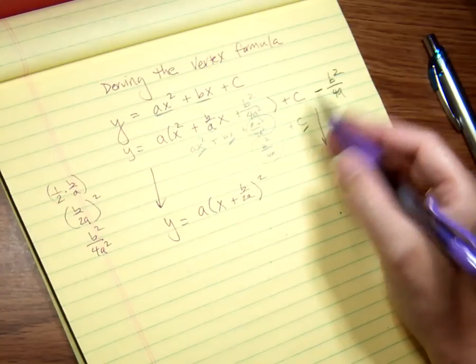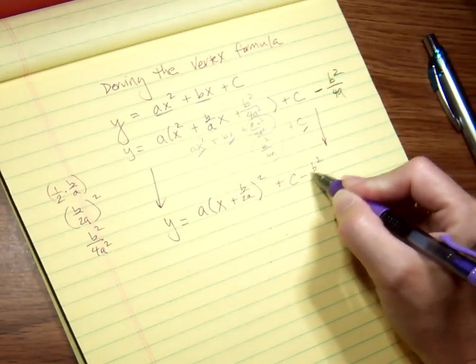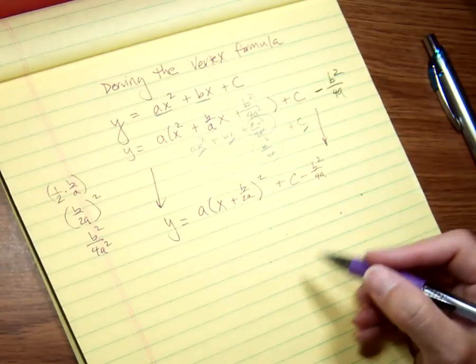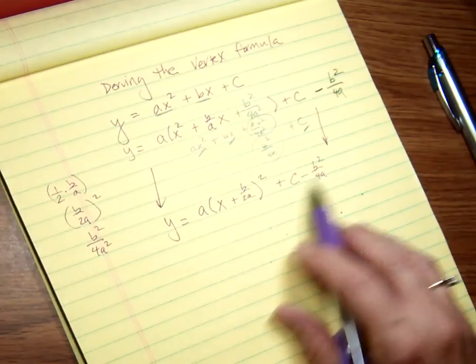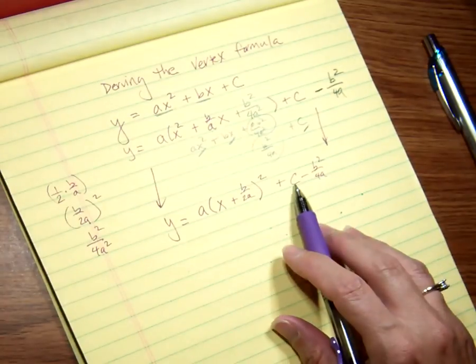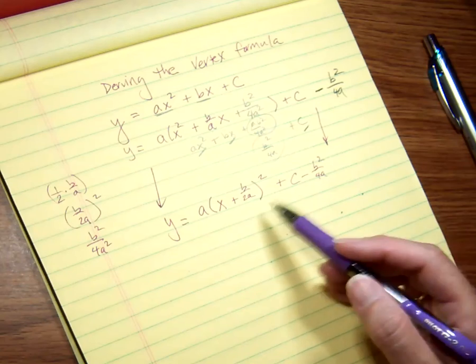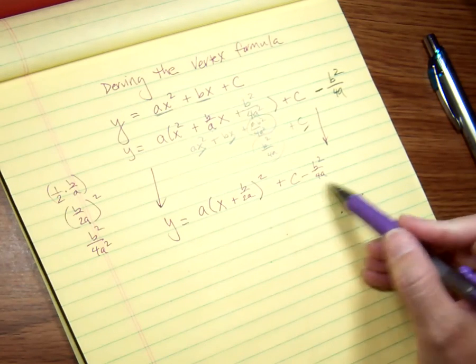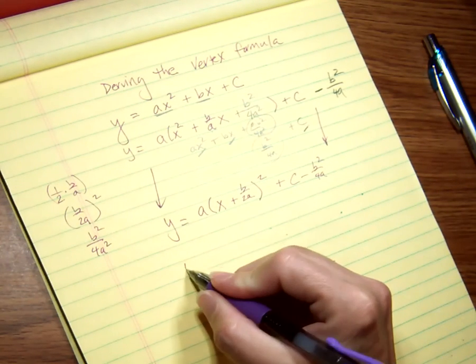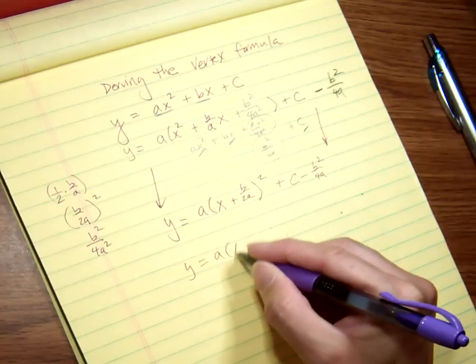And then I've created that extra term so that I can create a perfect square here. So when I took half of B/A, I got B/2A.